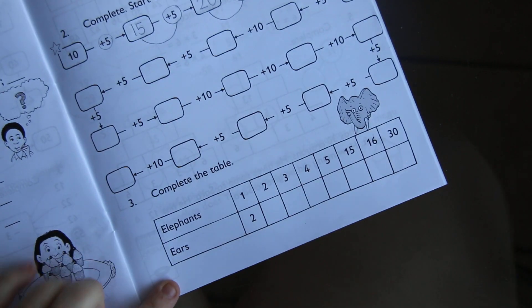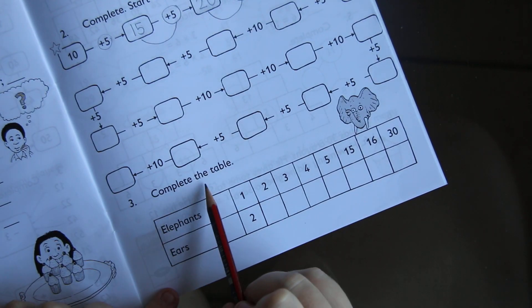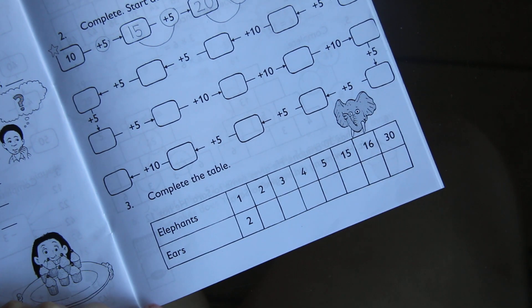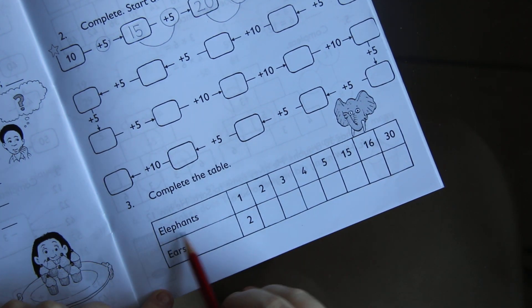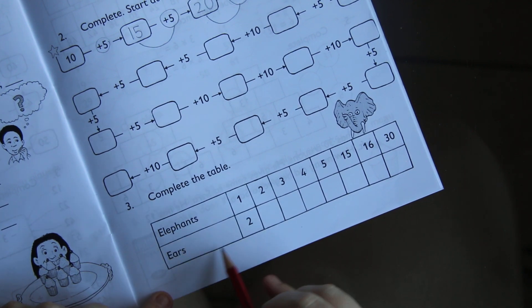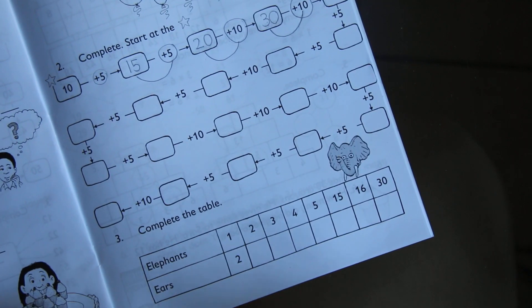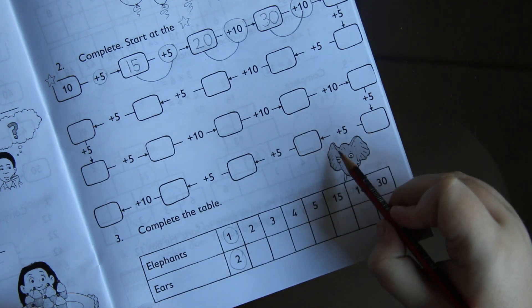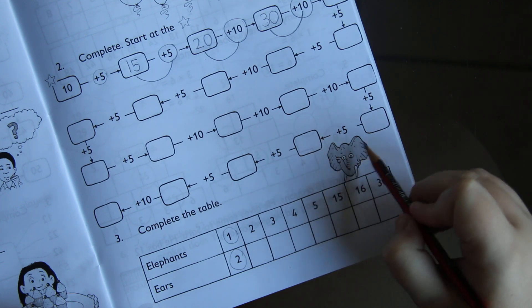Then question 3 says, complete the table. And we've got our little Ellie the elephant over there. So our table says elephants and ears. So they're saying for every one elephant, there are two ears. Because can you see here in our picture? He has two ears.